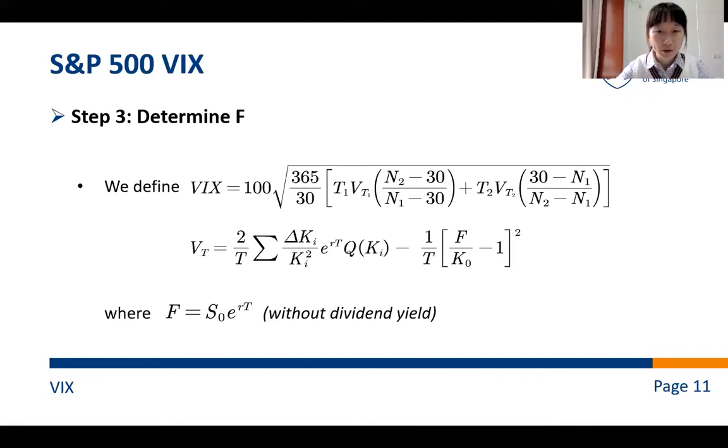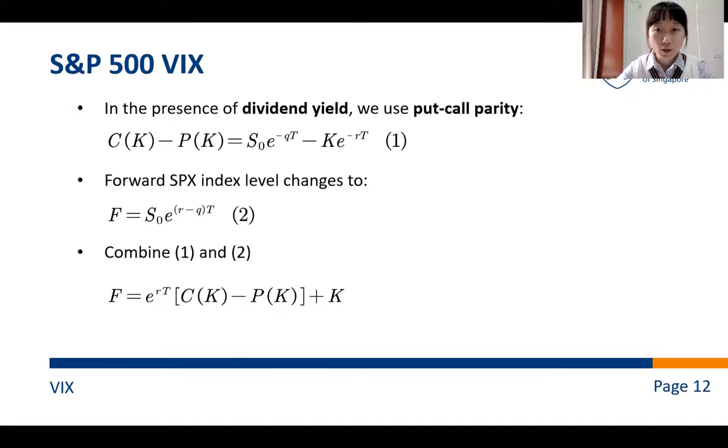Now, with all the preparation we have made, we can calculate the forward price. However, there is one important distinction between our lecture notes and reality. In lecture, we ignore the dividend yield. However, in reality, SP500 pays dividends. So, we should rewrite the put-call parity as equation 1. And if we take Q into consideration, F should be expressed as equation 2. Luckily, combining 1 and 2, we can obtain the forward price in this formula, just as shown in the last row.